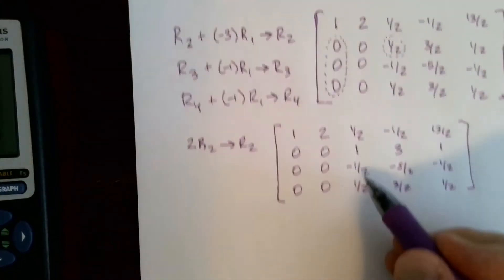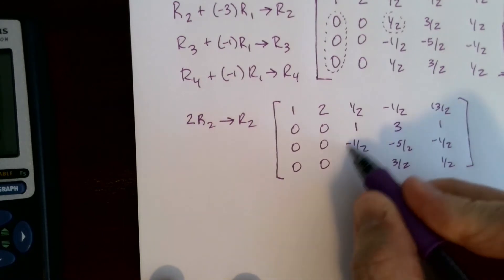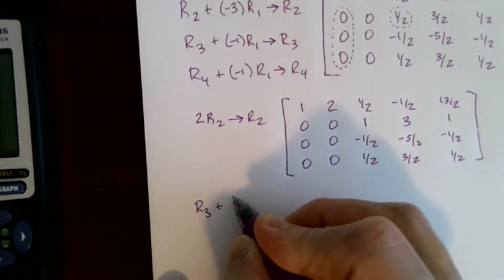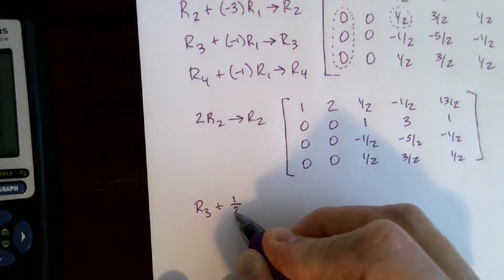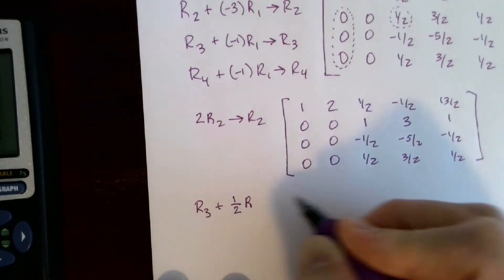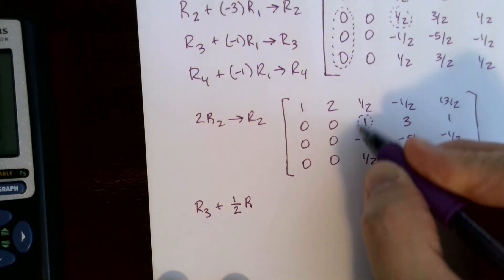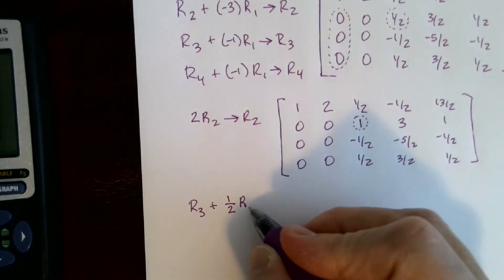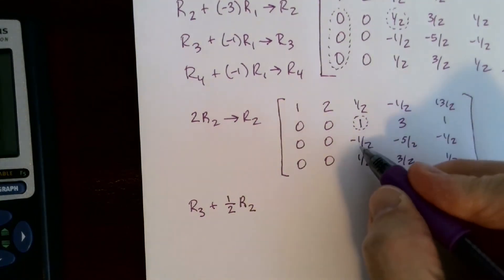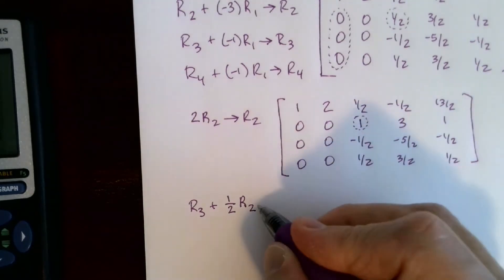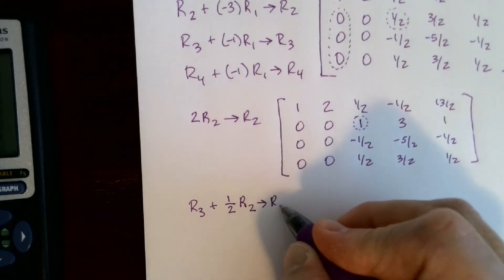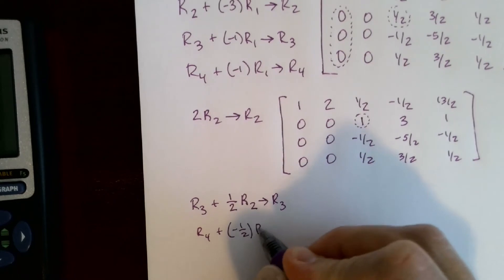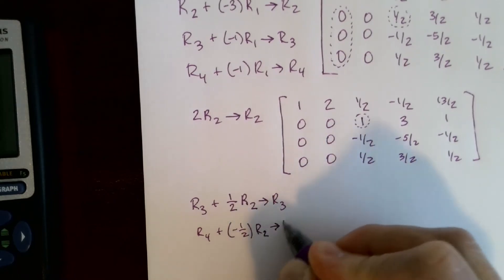Using 2nd entry multiple times to get back to the multiply row command, I edit it: the multiplier is now 2, the matrix is answer, and I'm multiplying row 2. That gives me the leading 1 in the third column of row 2. The matrix now shows: first column 1, 0, 0, 0; second column with 2, 0, 0, 0; and the new row 2 values.